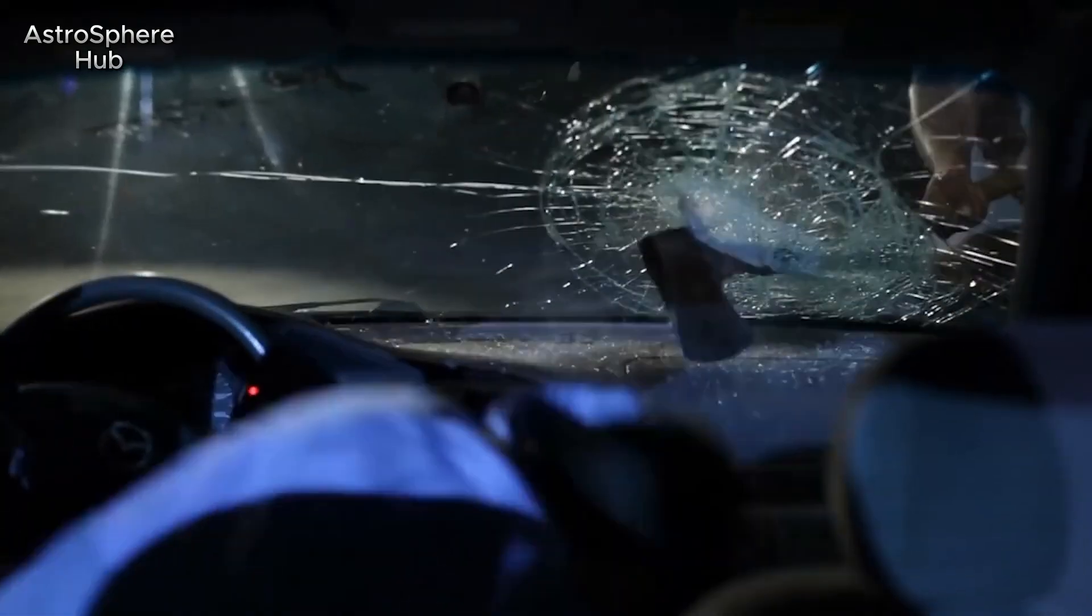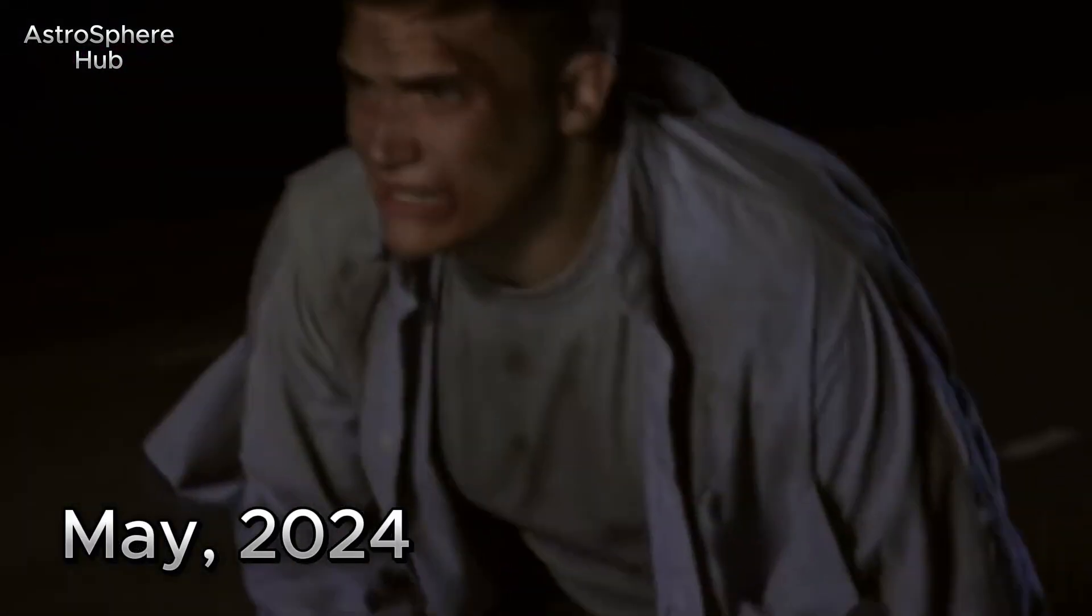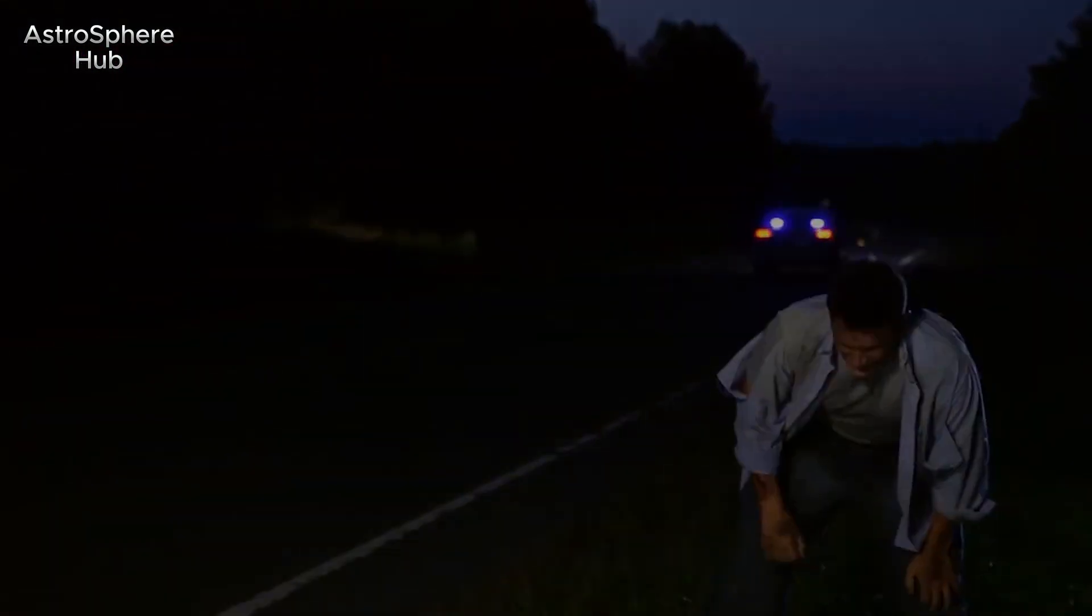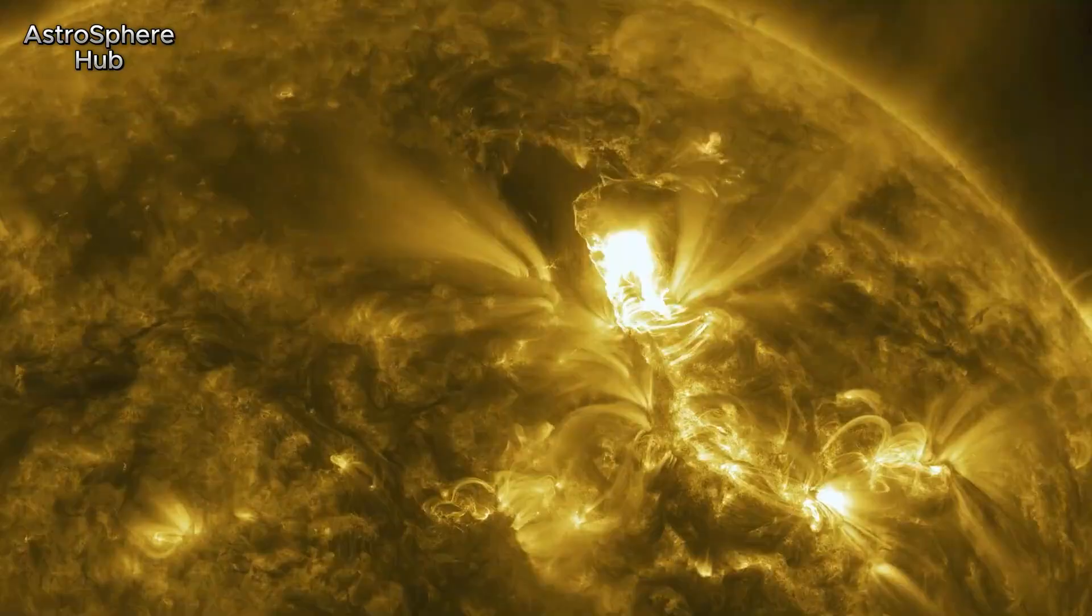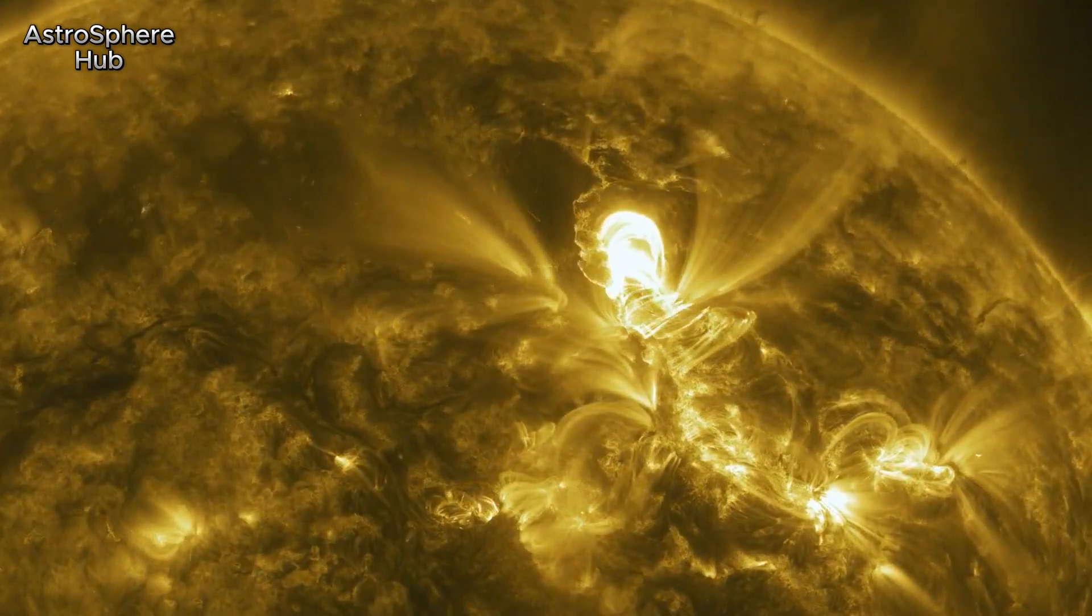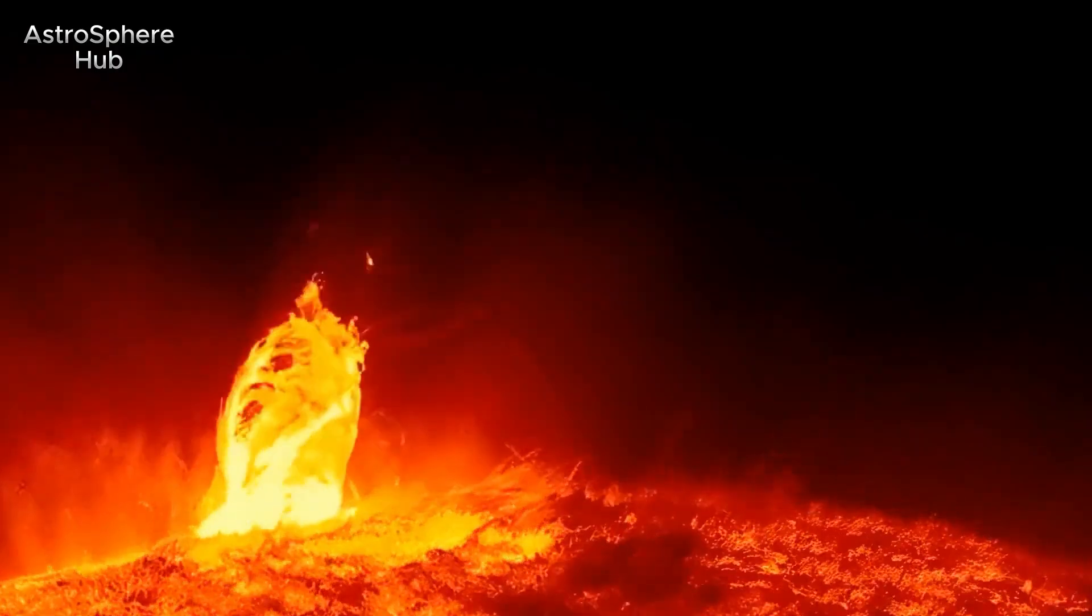It's a fact, at the beginning of May 2024, the Earth experienced one of the strongest geomagnetic storms of the last two decades, triggered by violent solar flares and coronal mass ejections.